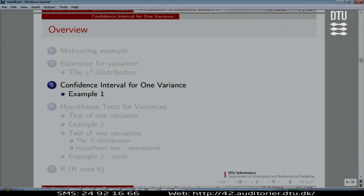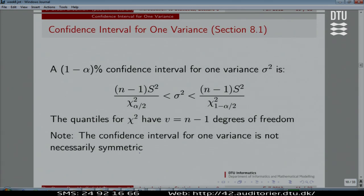Putting this theory about the sampling distribution of a variance into a specific operational form of a confidence interval for one variance. How can we make this confidence interval? Well, here's the formula.